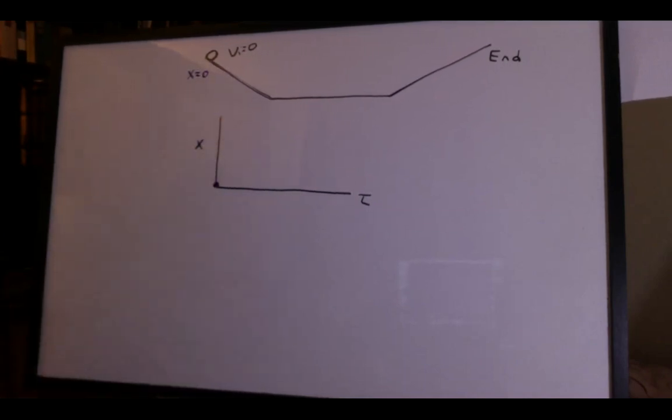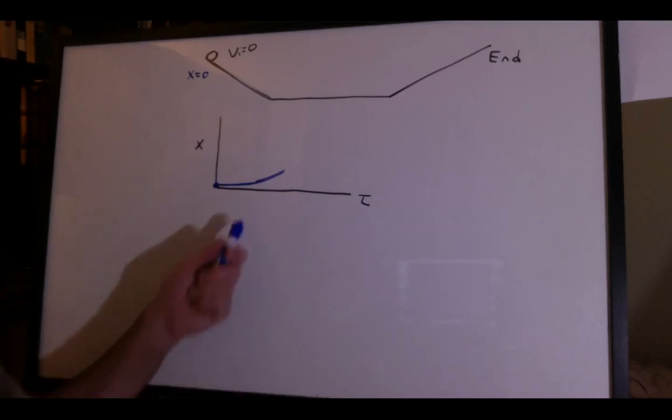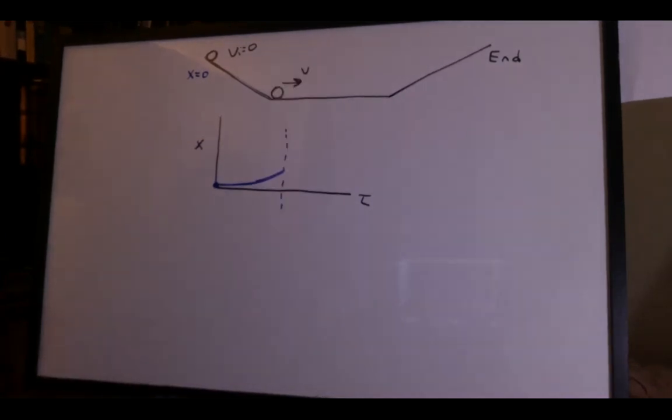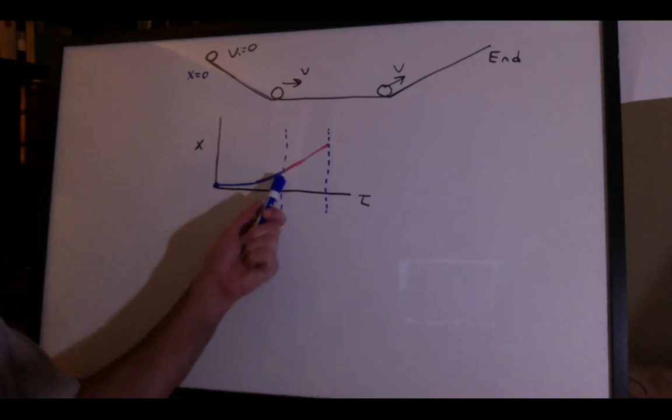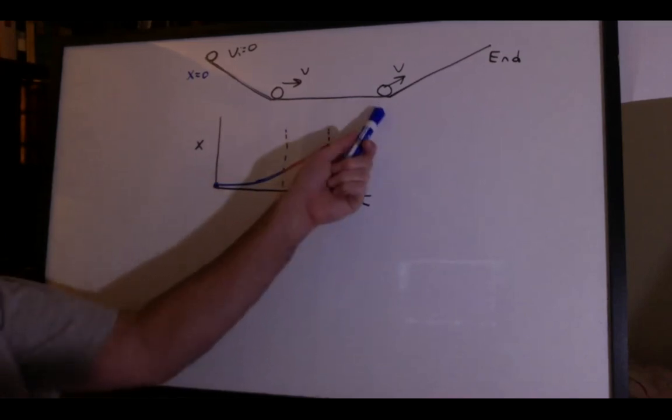The slope would have to increase. Now the ball has reached the bottom of the hill and it's going to move along at a constant velocity. So we draw a diagonal straight line. The slope is constant. Now we're ready to go up the hill.